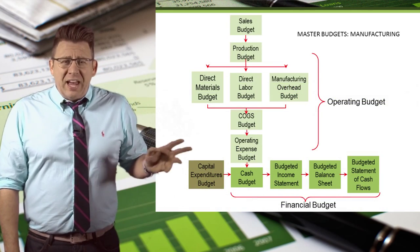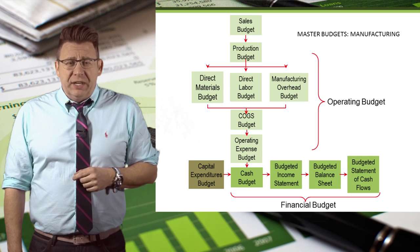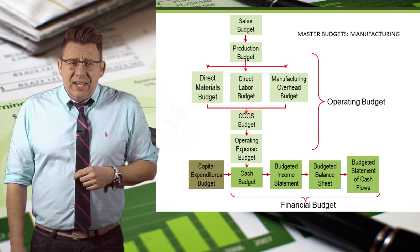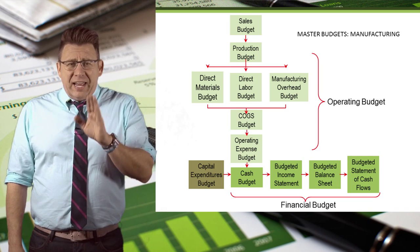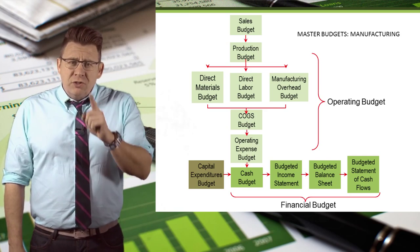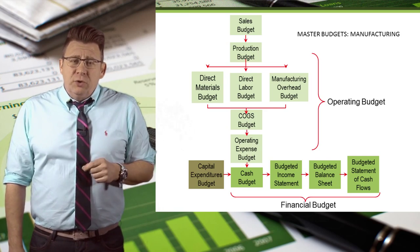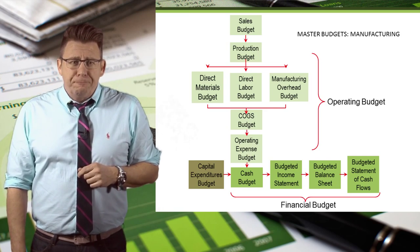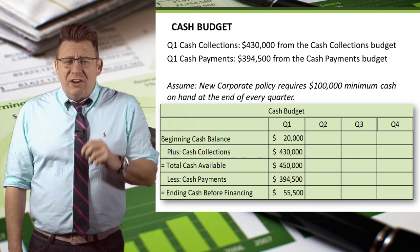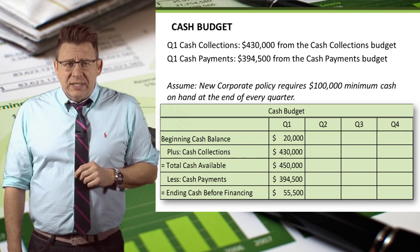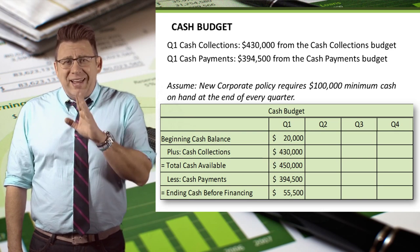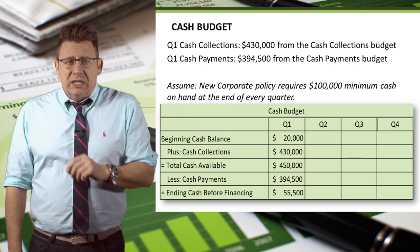The cash budget is the ninth budget completed in the master budget process, and it's a financial budget rather than an operating budget. To complete this budget, we start with our beginning cash balance, which is the prior quarter's ending balance.